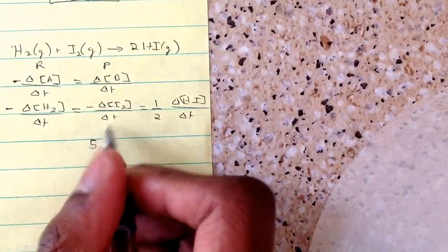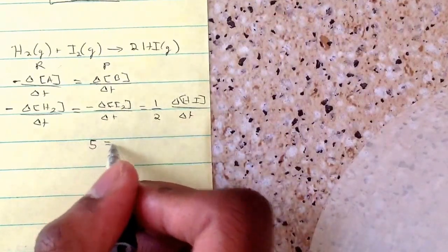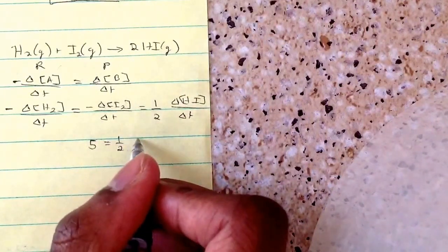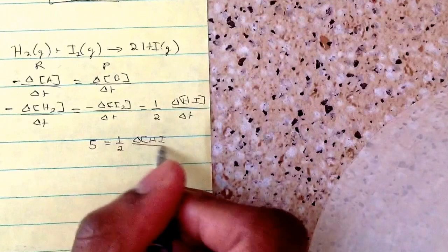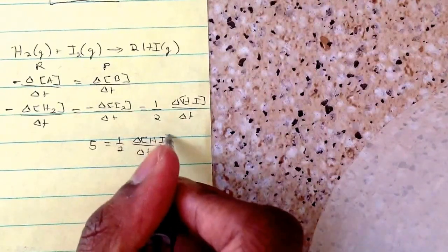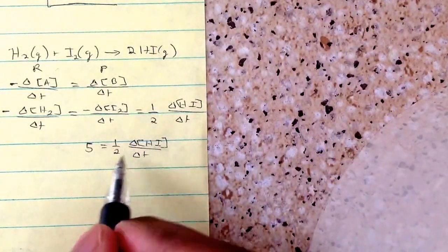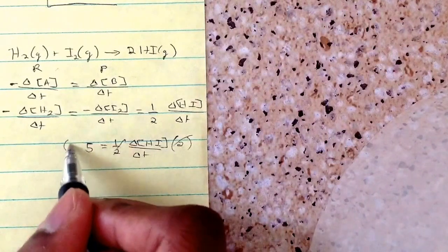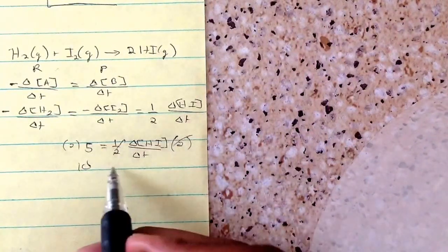So it'll become, if we're doing this, if the rate's 5, it'll be 5, and then it'll equal one half times change of HI over change of t. And then, just to find the rate of this, all you have to do is multiply by 2. So that cancels, and then the rate of HI will actually be 10.